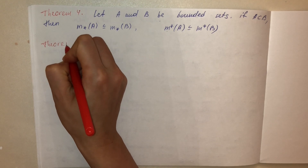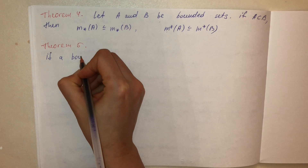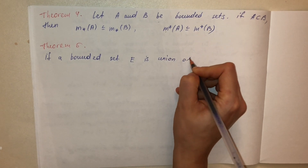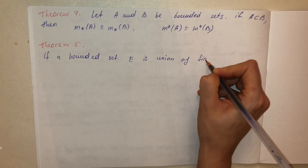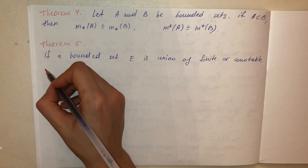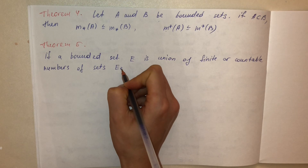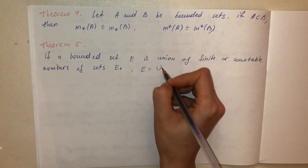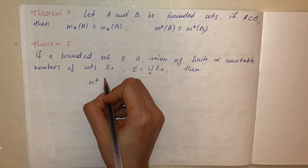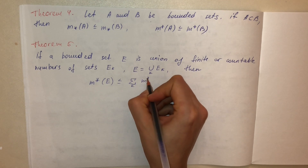Theorem 5: If a bounded set E is the union of a finite or countable number of sets E_k, then the outer measure of E is always less than or equal to the sum of the outer measures of E_k.